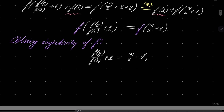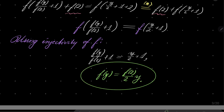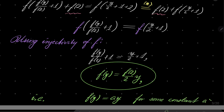That means we have our explicit formula: f(y) = (f(2) / 2) · y. In other words, f(y) is a linear function f(y) = ay for some constant a, which is obviously greater than zero because our function maps positive real numbers into themselves.